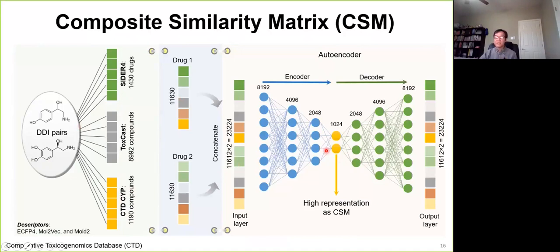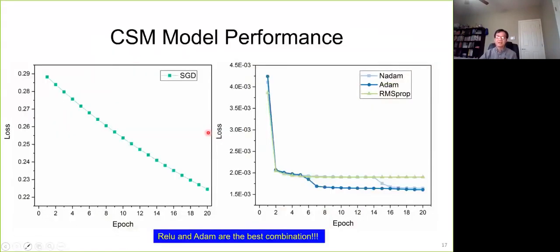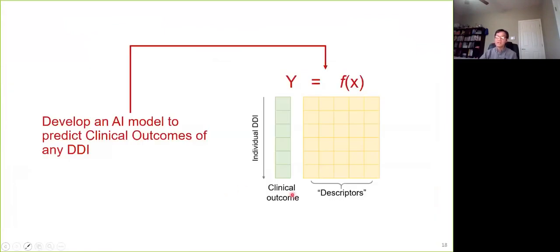For these studies, we actually use their hidden representation to describe their information, so-called composite similarity matrix. Here is the CSM model performance. You can see we tried different parameters in the deep learning models. Eventually, we found this activation, ReLU, and the optimization Adam as the combination for this model.